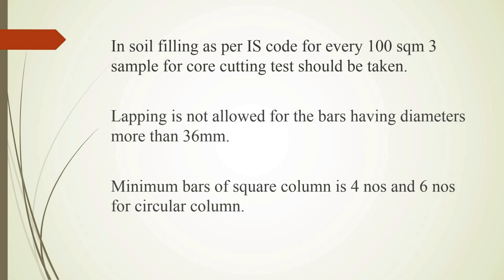In columns, lapping is provided for joining two reinforcements, but it is not allowed for bars having diameters more than 36 mm. The minimum number of bars for a square column is 4 numbers and for a circular column is 6 numbers. This is the minimum bars required in column construction.